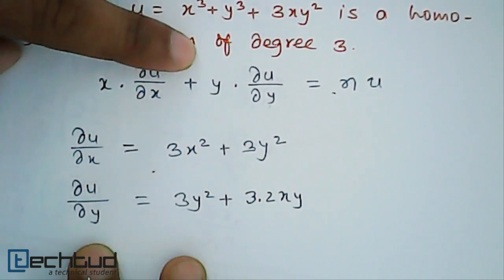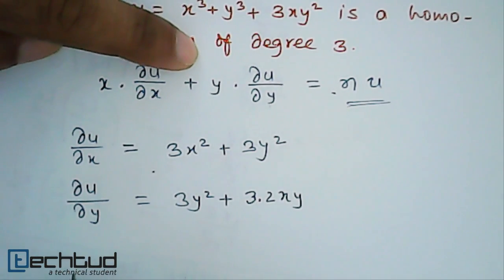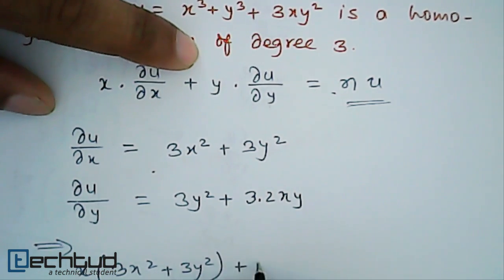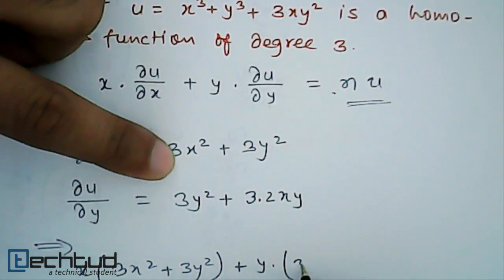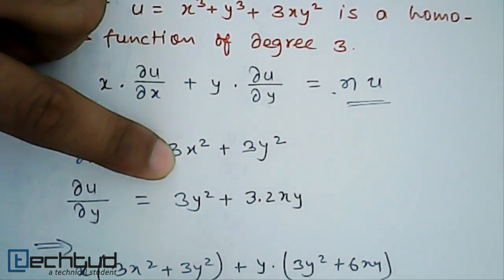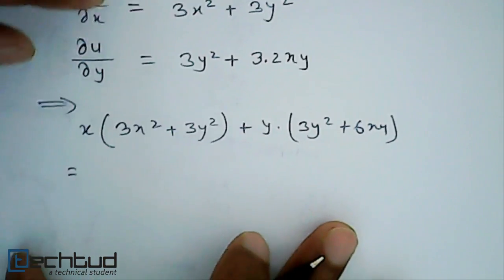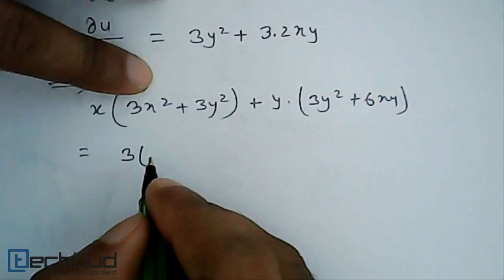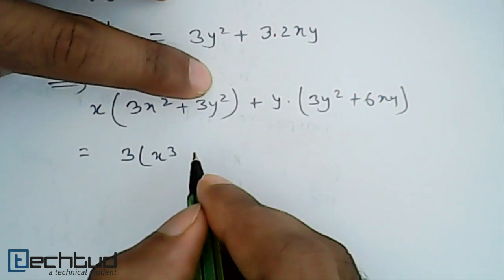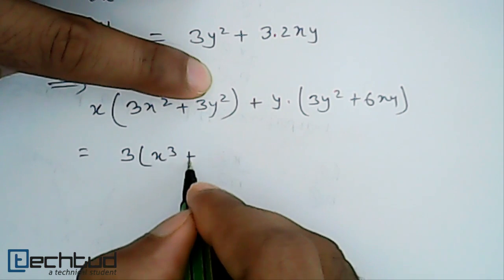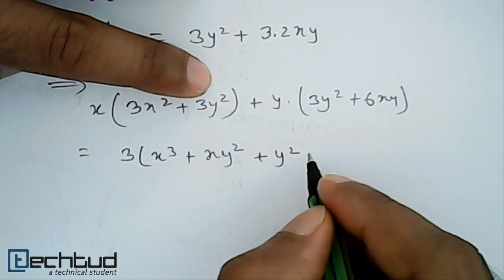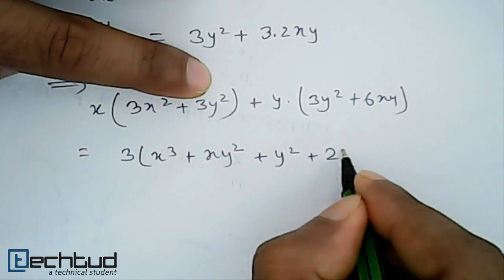Now we will substitute these values into Euler's theorem formula to see whether it works. So it will be x times (3x squared plus 3y squared) plus y times (3y squared plus 6xy). Expanding and taking 3 as common, we get 3 times x cubed, plus x times y squared, plus y cubed, plus 2xy squared.